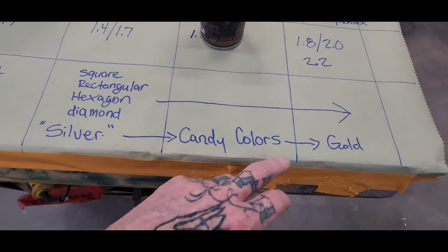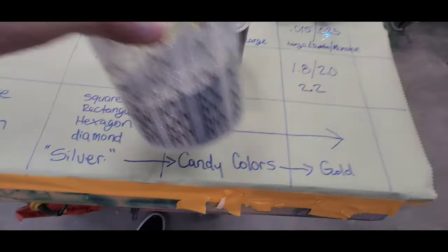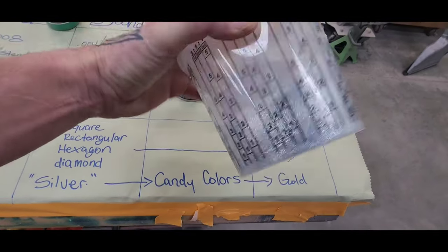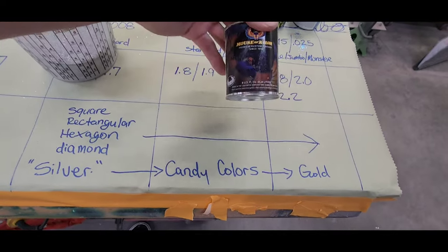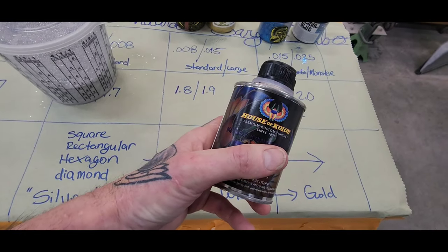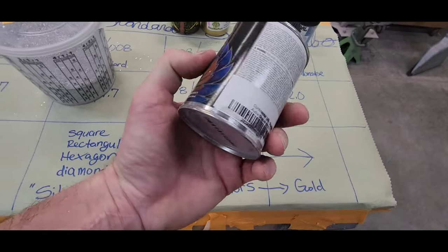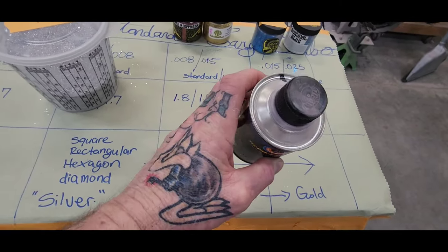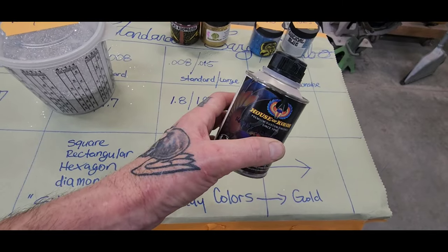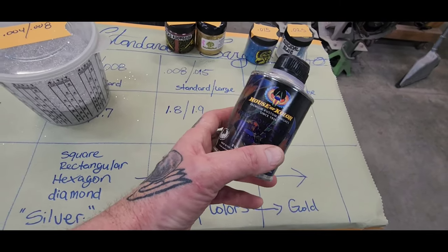Then when it comes to your candies. And you're doing your base silver. Base silver flakes. You're going to be using a candy concentrate. Like House of Color. They sell these in pints. In half pints. And these go a long damn way. You can turn this into a quart. Easily.